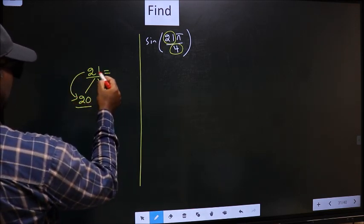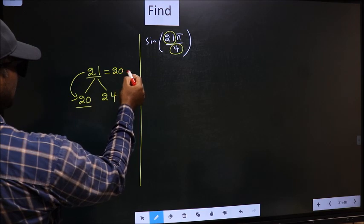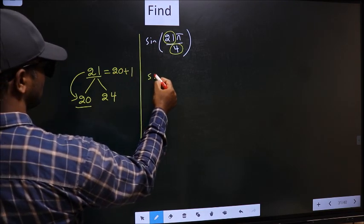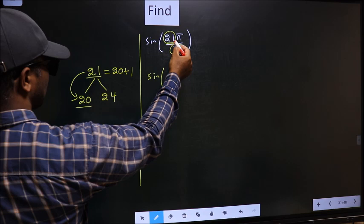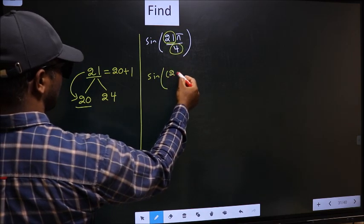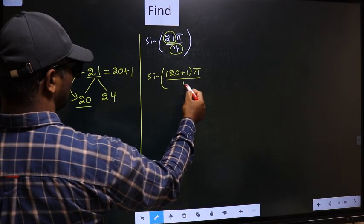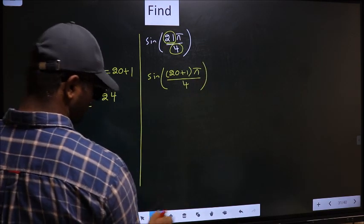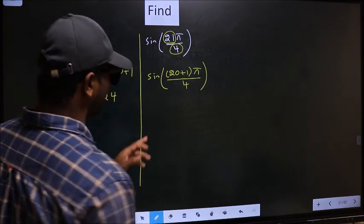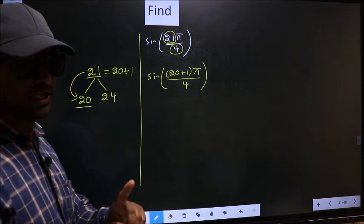So, now 21 should be written as 20 plus 1. So, this will change to sine. In place of 21, now you write 20 plus 1 pi by 4. This is your step 1.